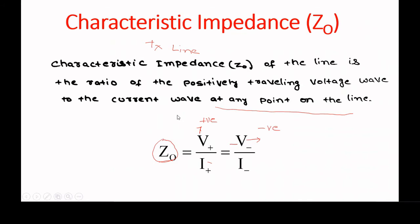Anywhere on the line, if you measure the ratio of positive travelling voltage to the current wave, or negative travelling wave voltage to the reflected current wave, it will give you the same impedance value. That is why it is called characteristic impedance — it characterizes the transmission line.